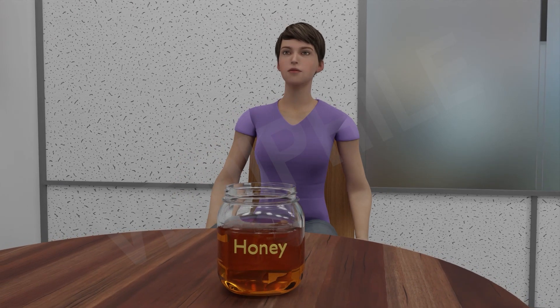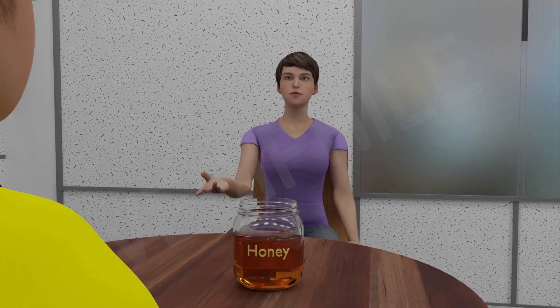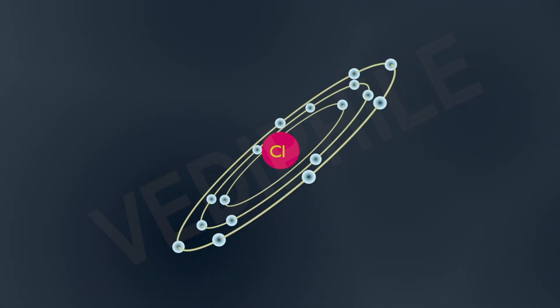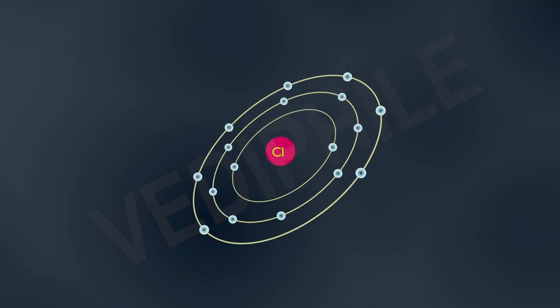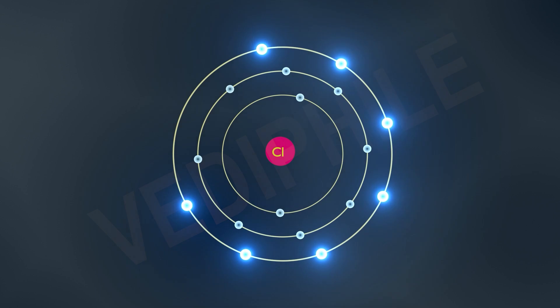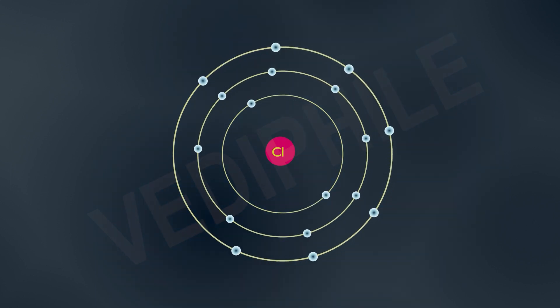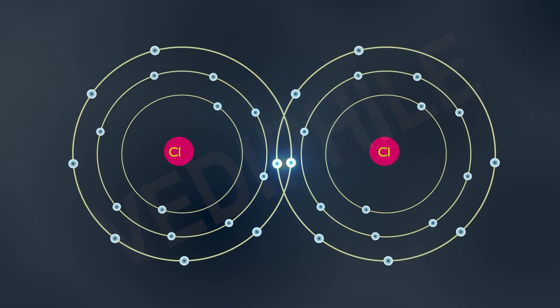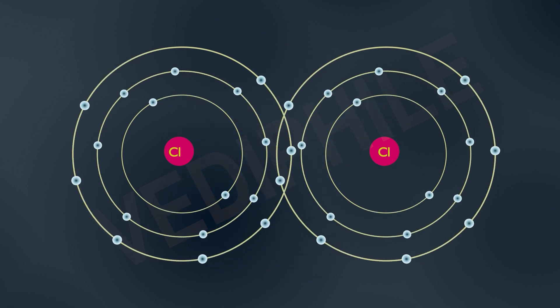Let's go for one more example of covalent bond. The atomic number of chlorine is 17. Chlorine forms a diatomic molecule Cl2. How many electrons does it need to share? Its outermost shell has seven electrons, so chlorine shares one electron with the other chlorine atom and forms a covalent bond between them. Cl2 molecule is formed.